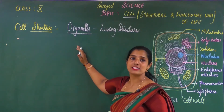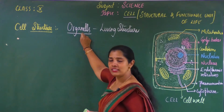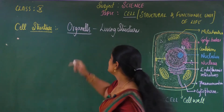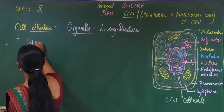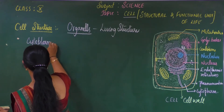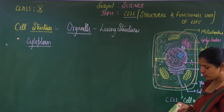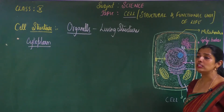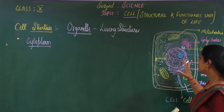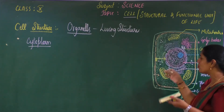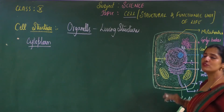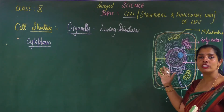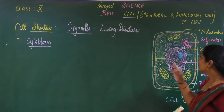If the cell is living then the organism is living. If the cell does not perform its work or does not have its proper functioning, then it definitely affects the organism. This is applicable for both unicellular organisms as well as multicellular organisms. Organelles are the living parts of the cell which are scattered inside the cytoplasm.